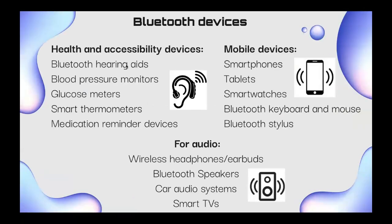Bluetooth health and accessibility devices include Bluetooth hearing aids, blood pressure monitors, glucose meters, smart thermometers, and medication reminder devices — a lot of technology right now uses Bluetooth. Smartphones, tablets, smart watches, Bluetooth keyboards, Bluetooth stylus like the Apple Pencil. For audio: wireless headphones, earbuds, Bluetooth speakers, car audio systems, and smart TVs.